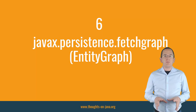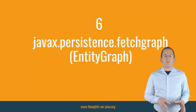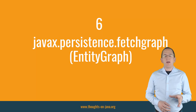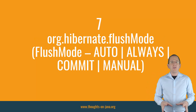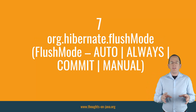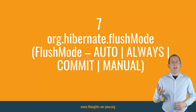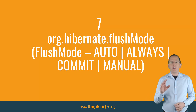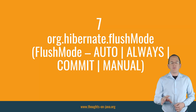These were the most important query hints defined by the JPA specification. Let's continue with the Hibernate specific ones. If you modify an entity, Hibernate keeps these changes in the 1st-level cache until it gets flushed. By default, this happens before each query, but you can control it by providing a value of the FlushMode enum as the org.hibernate.FlushMode hint.